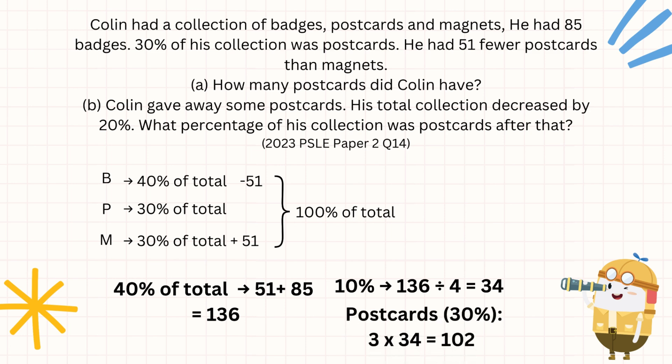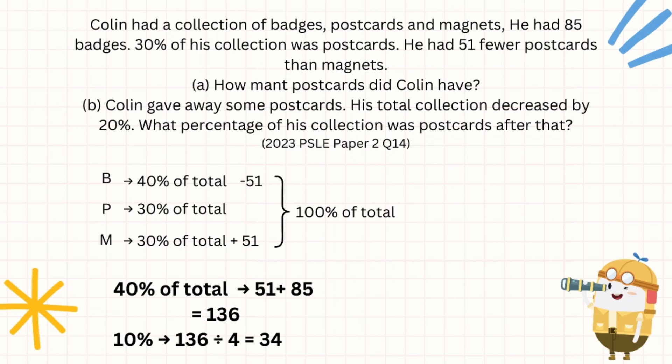Now let's do the second part. Colin gave away postcards and his total collection decreased by 20%. Originally it was 100%, but now it has dropped to 80%. We can first find what is 80%, which is the new total. 80% of the total equals 8 times 34 — remember 10% is already given to be 34 — which gives us 272.